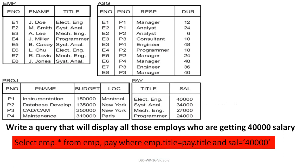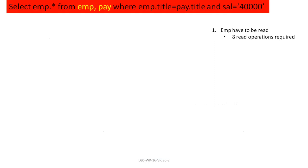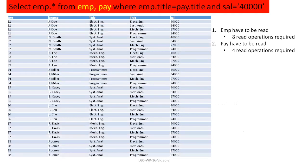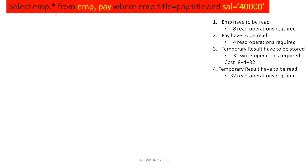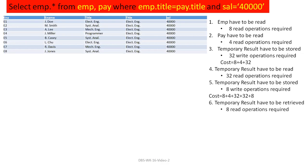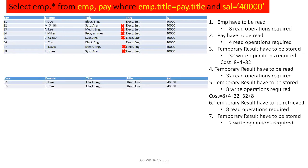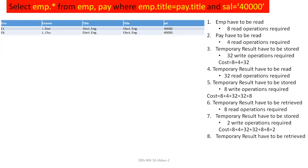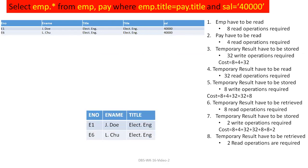Let's do another example: employer pay where emp.title. First, employer must be read — 8 read operations. Pay must be read — 4 operations. The result forms a temporary result of 32 records which must be stored — 32 write operations. Then the condition salary equal to 40,000 requires 32 read operations, and after applying the condition results are written. Then another condition applies — 8 reads, result is 2 records — 2 write operations. Finally projection is applied on these 2 records — 2 reads — and the final result is produced.